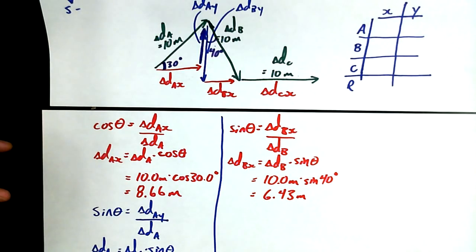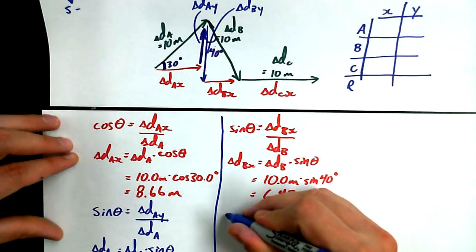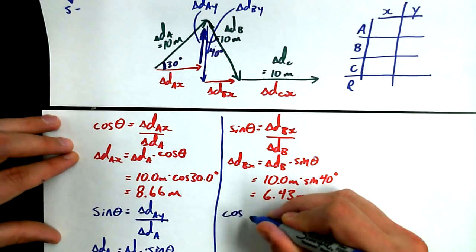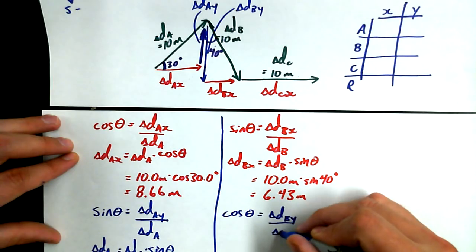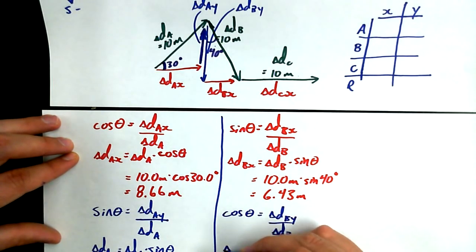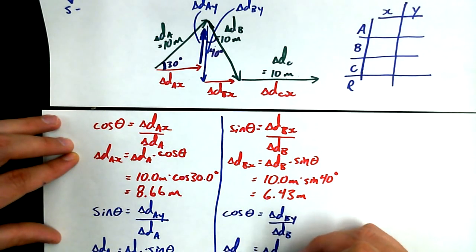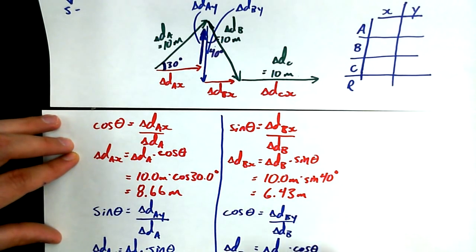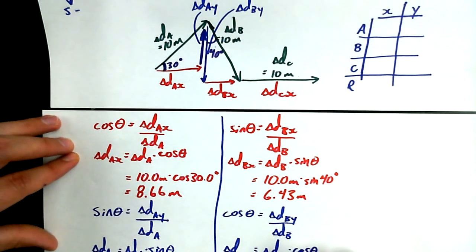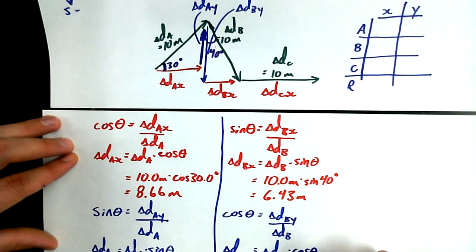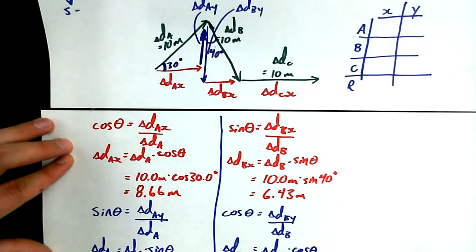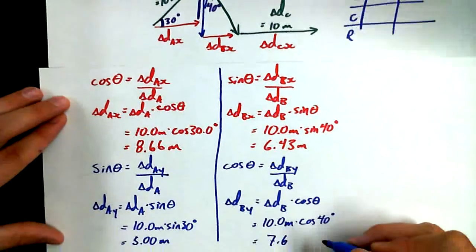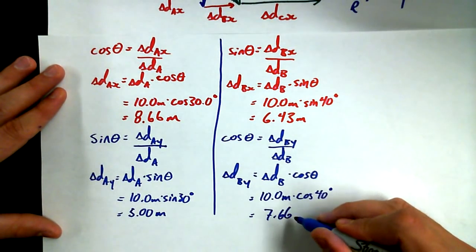We can do the same thing for the y component of that vector. We can say cosine theta equals delta dby over delta db, or delta dby is equal to delta db times cos of theta, or 10.0 meters times cos of 40 degrees is equal to 7.66 meters.